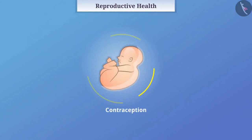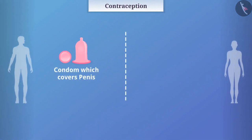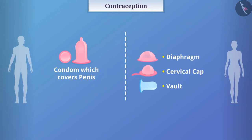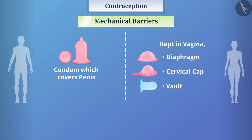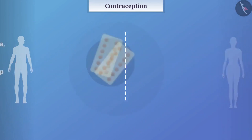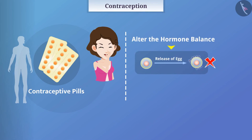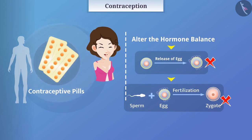Various solutions of contraception have been discovered to solve these problems. A condom covers the penis, and devices such as the diaphragm, cervical cap, and vault can be kept in the vagina — these are mechanical barriers made of rubber. They prevent sperm from reaching the egg, avoiding pregnancy, and also help prevent transmission of sexually transmitted diseases. Contraceptive pills are medicines consumed by women that alter the hormone balance, preventing release of an egg and thus eliminating the possibility of fertilization, though they may have some side effects.